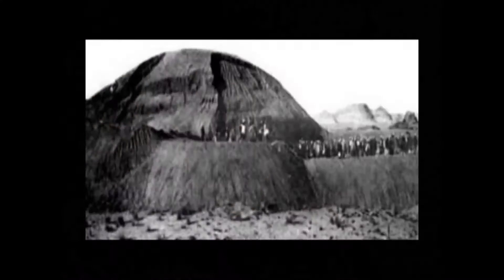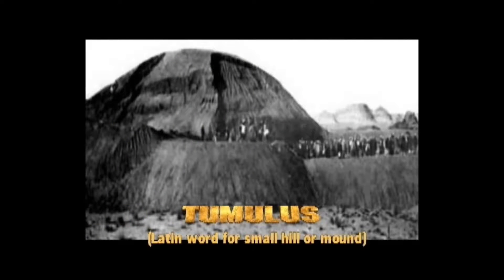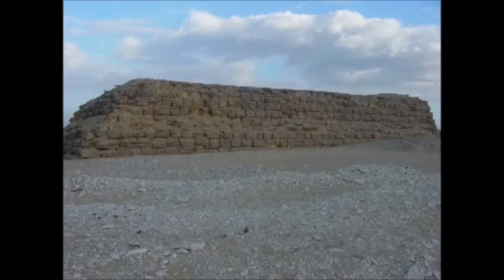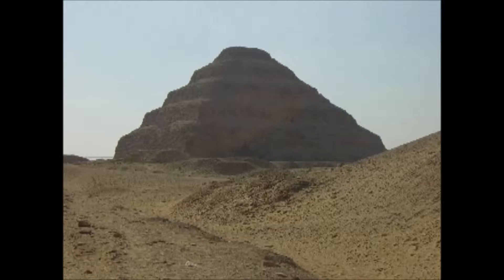Going back to ancient pre-dynastic times in Kemet, we see what were referred to as tumulus — round, oval-shaped grave structures packed with dirt — mounds laid on top of the graves of royalty. That eventually evolved into what the Arabs call today a mastaba. The Step Pyramid is a series of six mastabas placed one on top of another. But before we get into how the mastaba evolved into the Step Pyramid, let's step back to the tumulus.